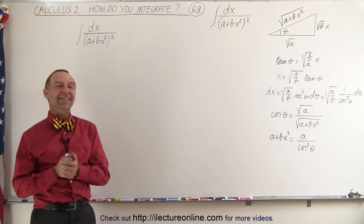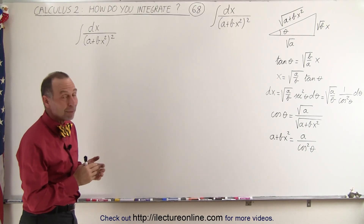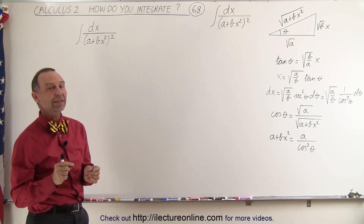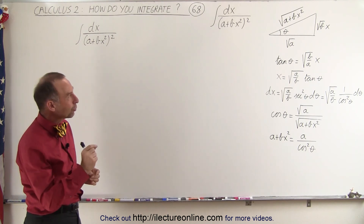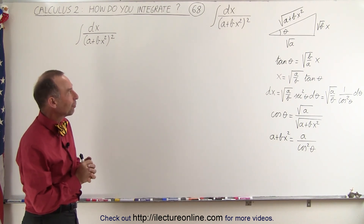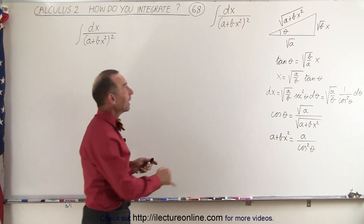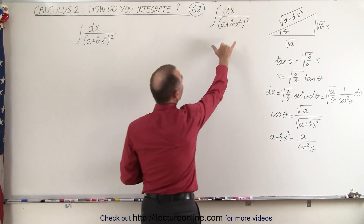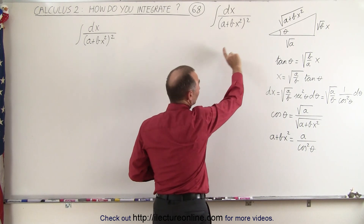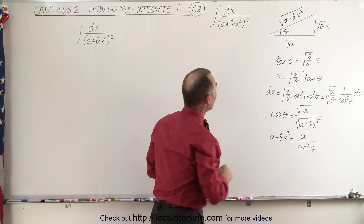Welcome to ElectronLine. Our next example is a little bit more complicated. However, we're going to use the same techniques as we did before. Notice the denominator now is squared. We can still use the trig substitution.